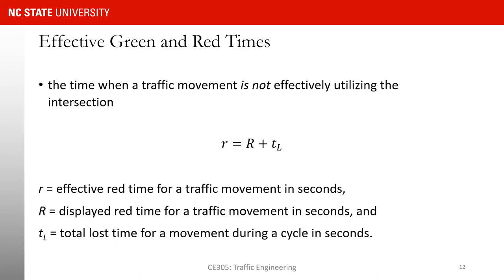Similar to effective green, we have effective red — the duration of time used effectively as red, shown as lowercase r. It equals capital R (actual red indication duration) plus total loss time. That's the time that no vehicle is going through the intersection from a certain lane group — that is what we define as effective red.